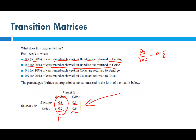You can see that each column adds up to 1.0 — multiply by 100 and that's 100%. The columns should always add up to 100%, and that's an easy check.